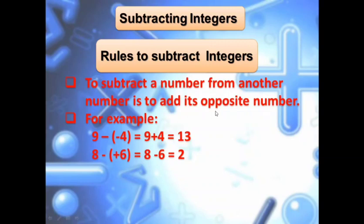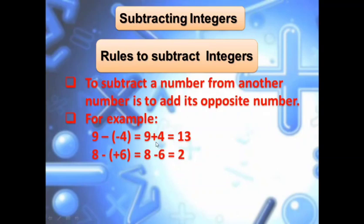Let's understand better with an example. If I have 9 minus minus 4 — I am subtracting minus 4 from 9. The opposite number of minus 4 is plus 4. So 9 plus 4 is 13. The bigger number is 9, which is positive, so the answer is positive 13. Next: 8 minus plus 6 — opposite of plus 6 is minus 6. So 8 minus 6 is 2. The bigger number is 8, so positive. You can write plus 13 or just 13.